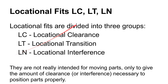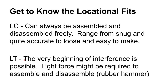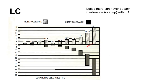There are also location fits — the dowel pin class comes to mind. These break down into LC, LT, and LN. With the LC series, there's never a chance of an interference fit. You can start to approach an interference condition with LC4, but you can never have a hole smaller than the shaft with the LC series.